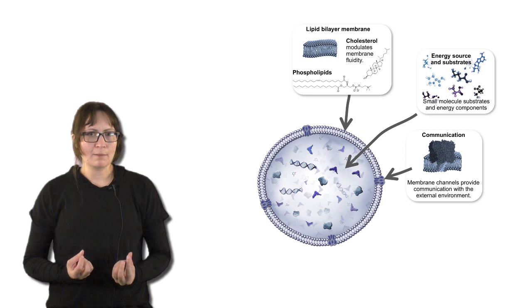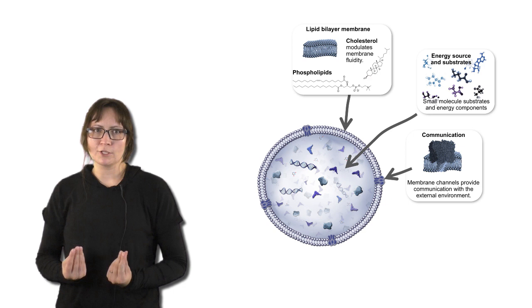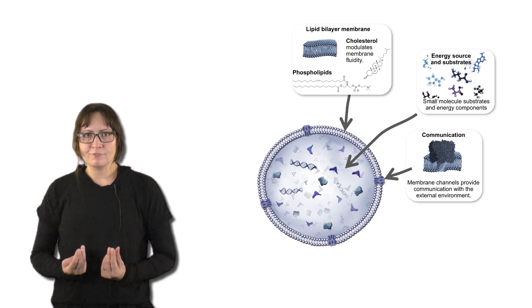For everything that is going on inside the entire metabolism, there has to be an energy source. All of modern life uses ATP as the main energy currency molecule, so it is reasonable to assume that this was also the molecule used to fuel the metabolism of the last universal common ancestor.